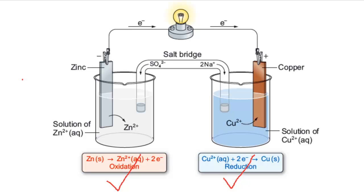When current is drawn from the cell, Zn is oxidized to Zn2+ and electrons flow down the wire to the right-hand half cell where Cu2+ is reduced to Cu.